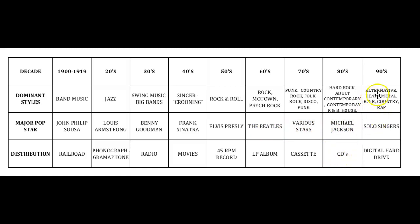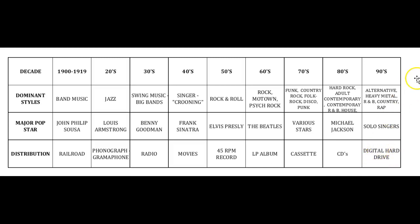In the 90s, you get alternative, heavy metal, a different kind of R&B, country, and rap comes into play in a key way. Of course, rap began back in the late 70s in the Bronx, New York. Solo singers — female and male both — become the real rage, with solo rappers as well. The digital hard drive takes over, and then in the 2000s we get into streaming and all that kind of stuff.